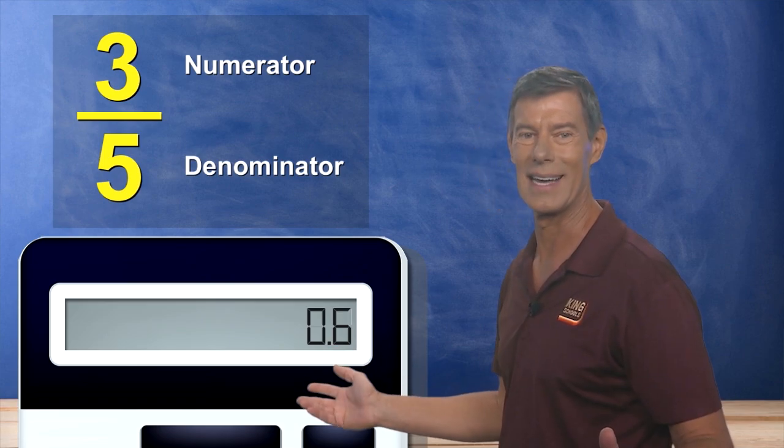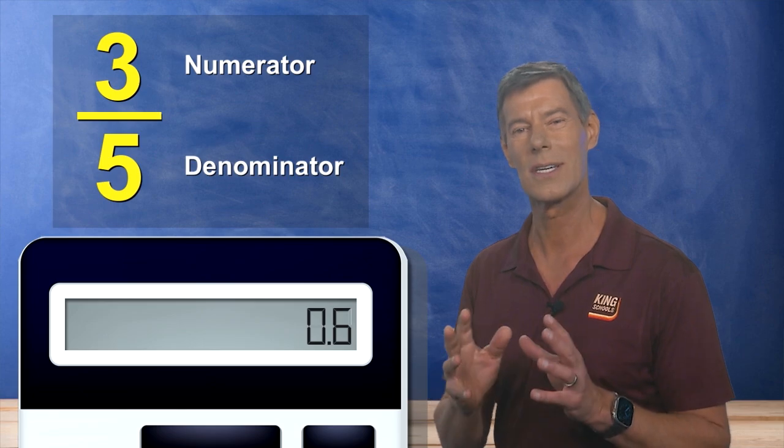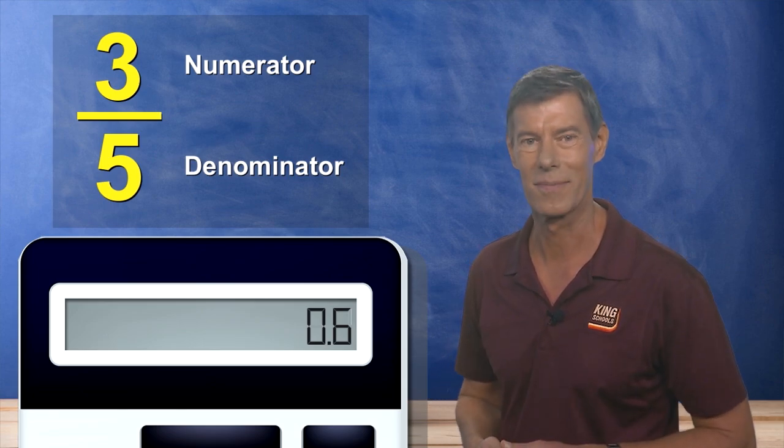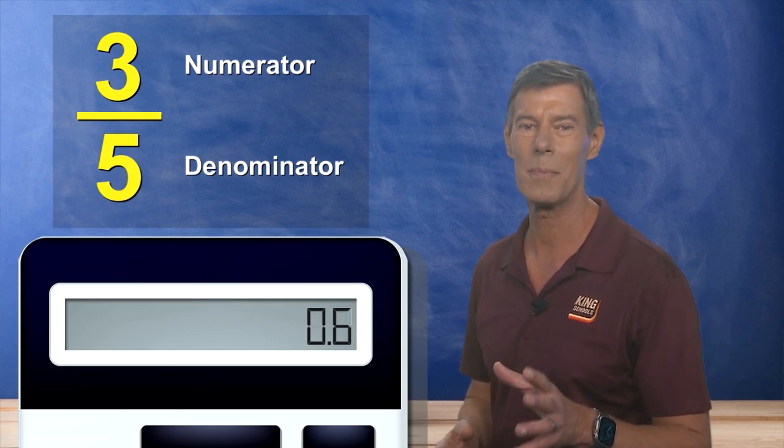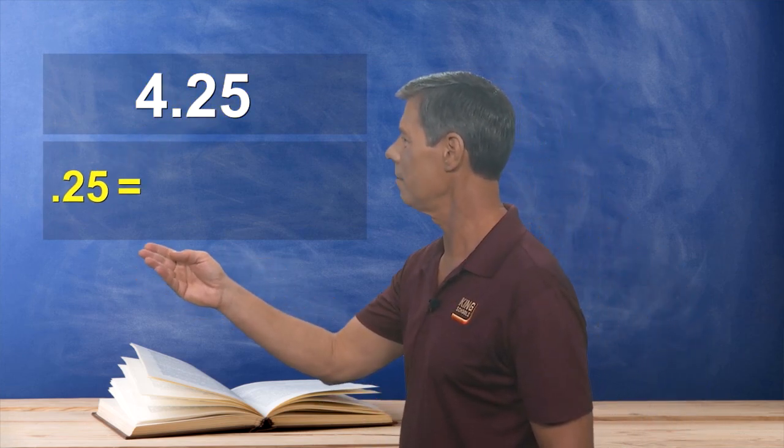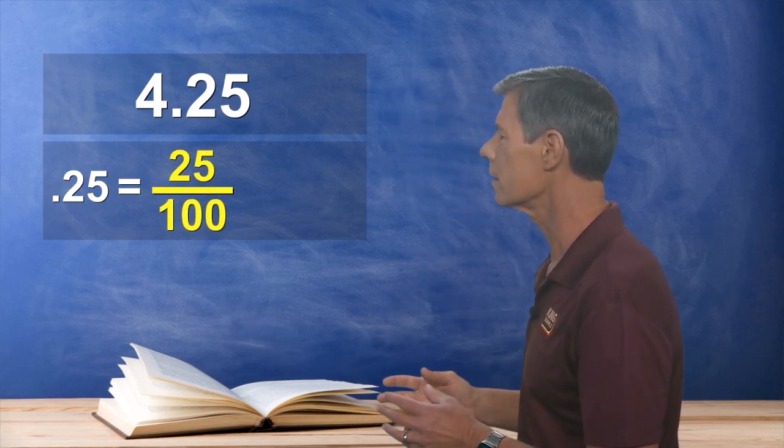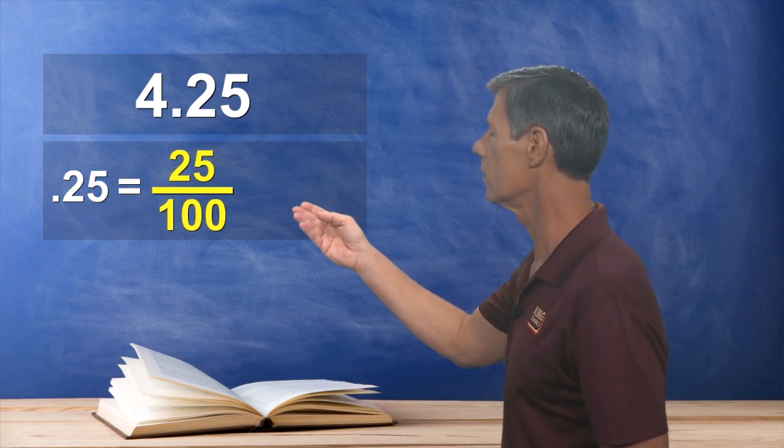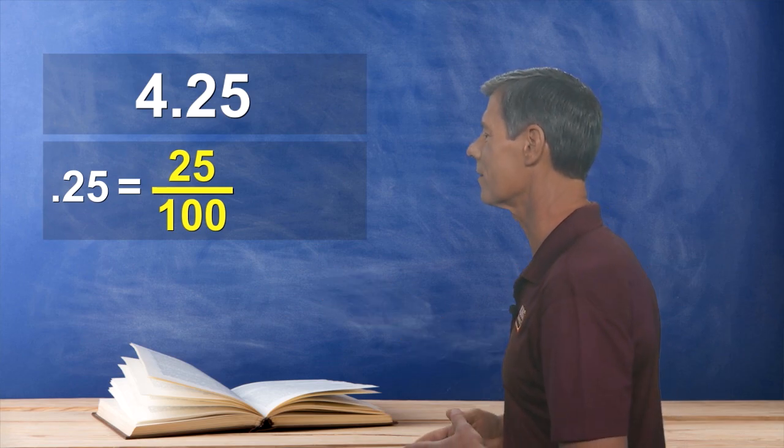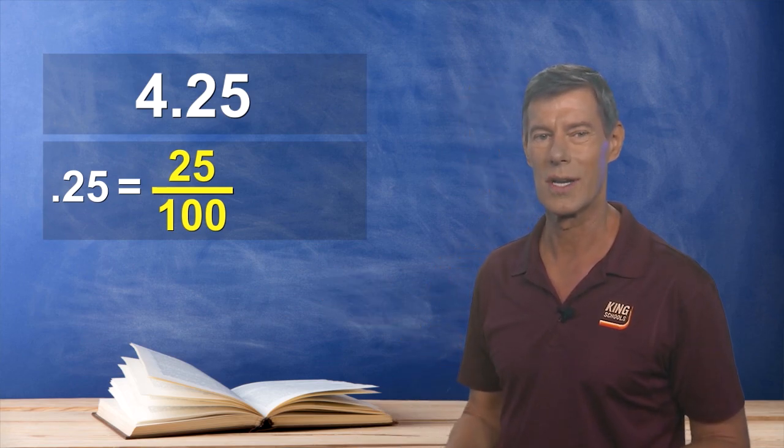Alright, that wasn't so bad. Now let's try going the other way around, and convert a decimal into a fraction. Now to do that, start by taking the numbers to the right of the decimal point, 25 in this example, and make them your numerator. Next, add 100 as the denominator below that. Now that sure looks like a fraction.